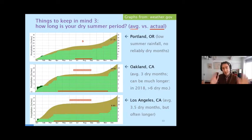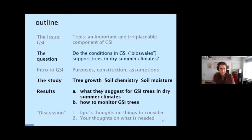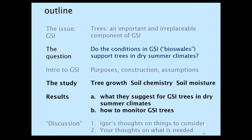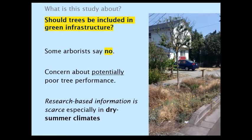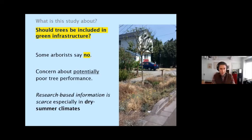So with that setup, let's talk about the study itself. This was a study I conducted starting in 2015 on tree growth, the chemistry of the substrate, and moisture in green stormwater infrastructure — the bioswales. I was trying to answer the question of whether trees should even be included in bioswales. A lot of arborists at that time, five years ago, said no, not really. They showed me examples like this one from Portland — a tree that was really struggling. Eventually those trees were taken out. But I'll tip my hand right away: what I found was that there were no bioswale-specific problems.